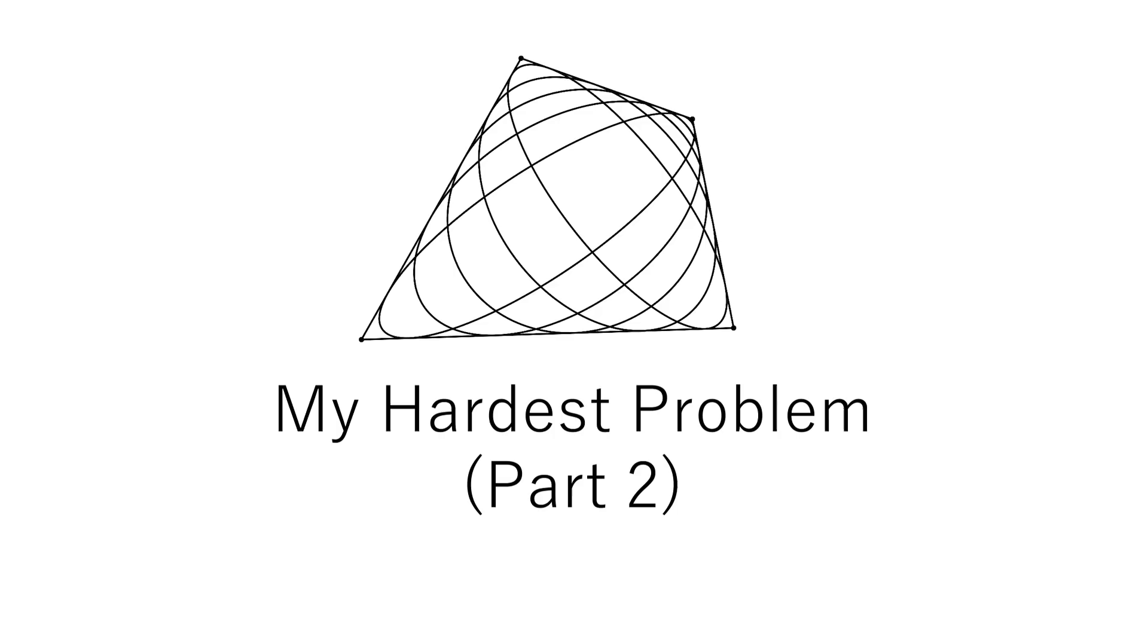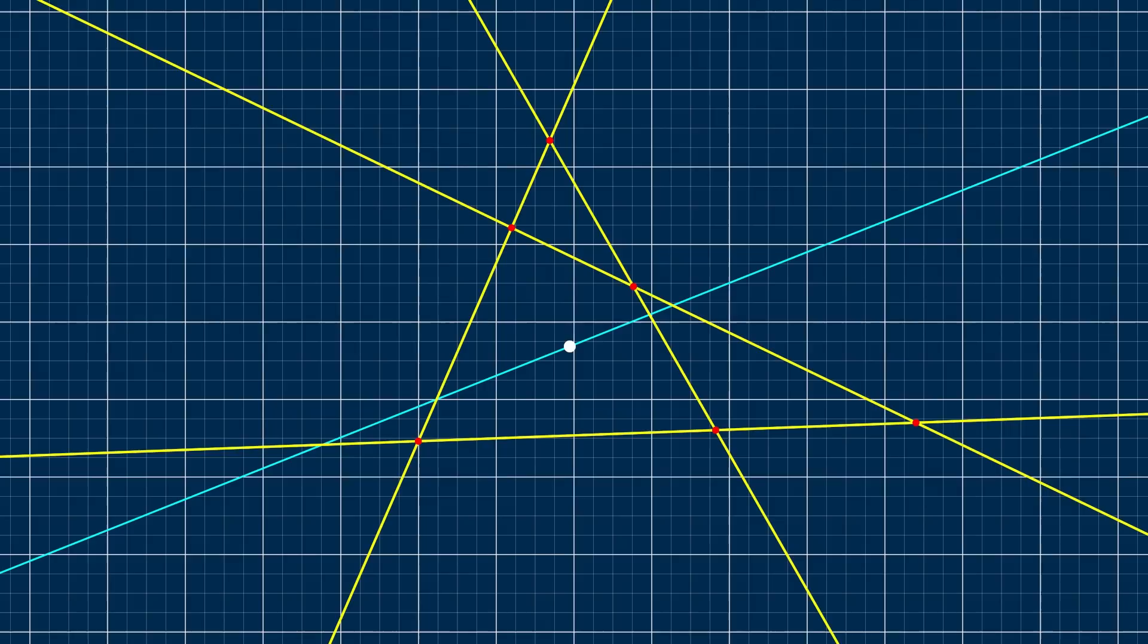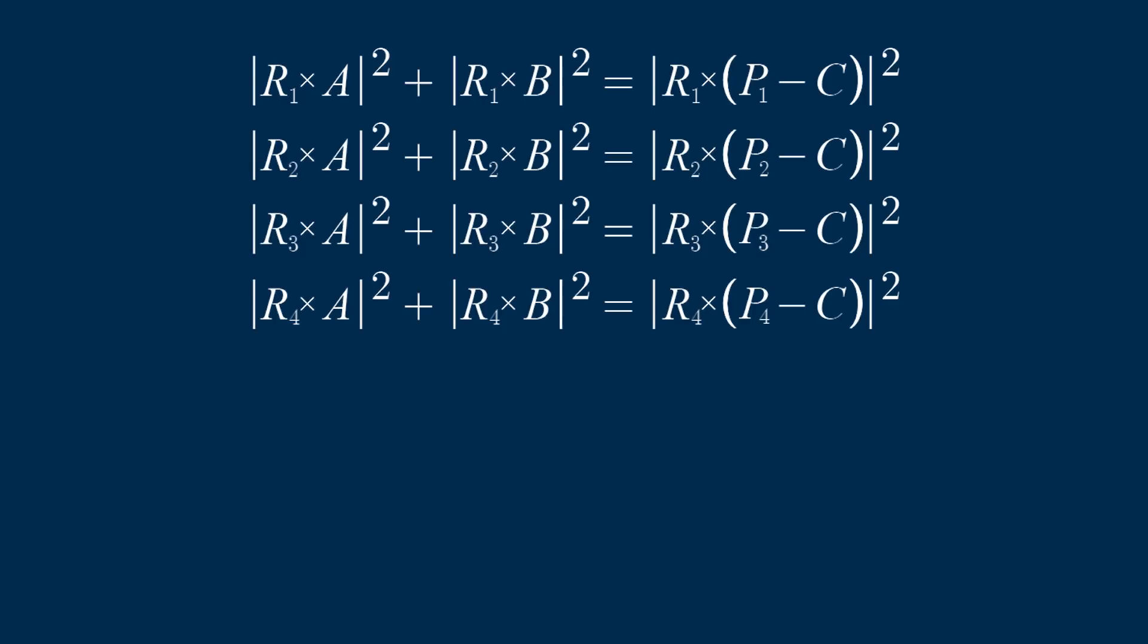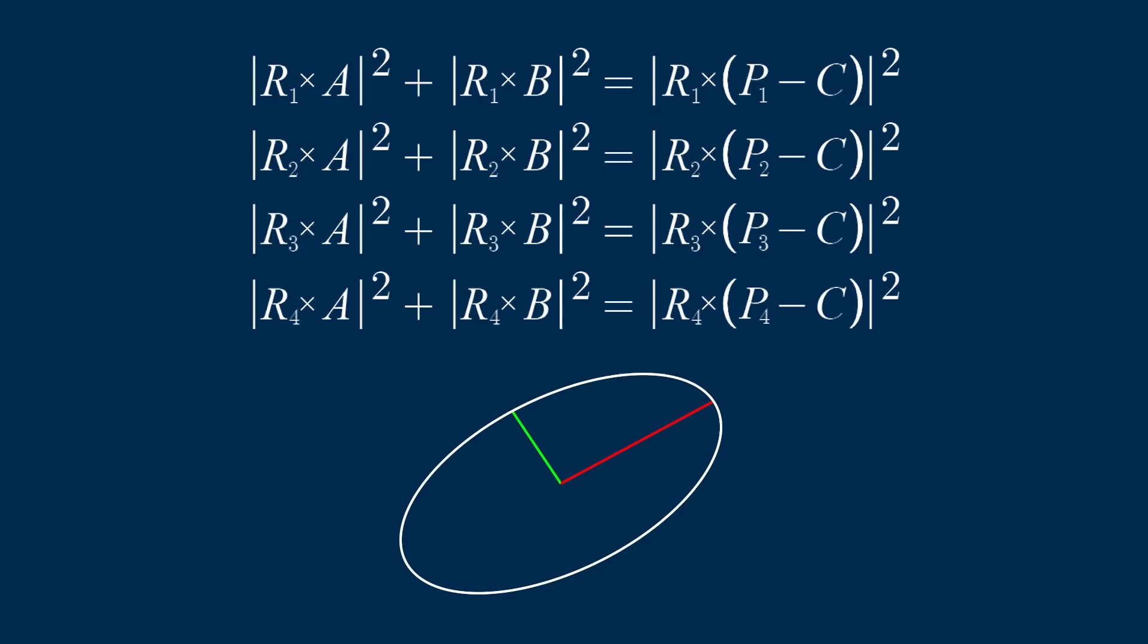Suppose we've already chosen that center point on the line, and we just need to find the axes. We'll have to go back to that tangent constraint formula I mentioned earlier. We have four tangent lines, so it looks like there's four equations with four unknowns, the x and y components of A and B.